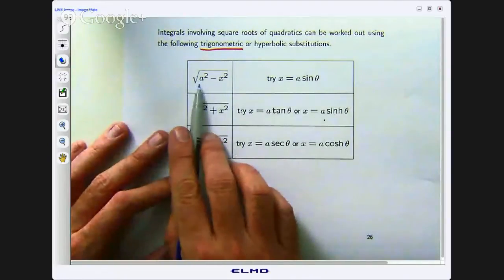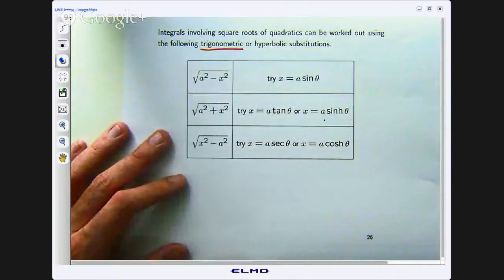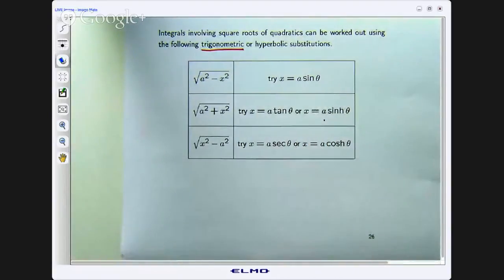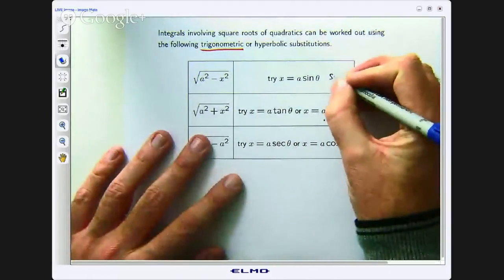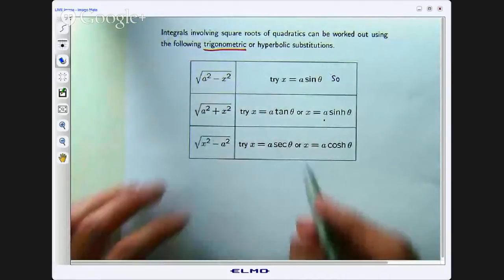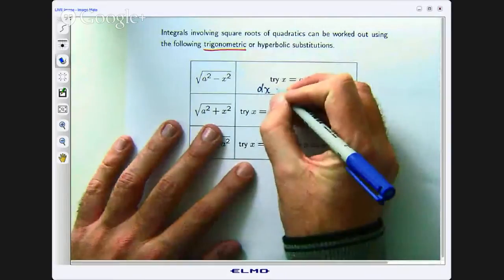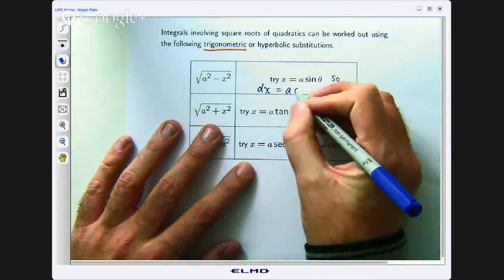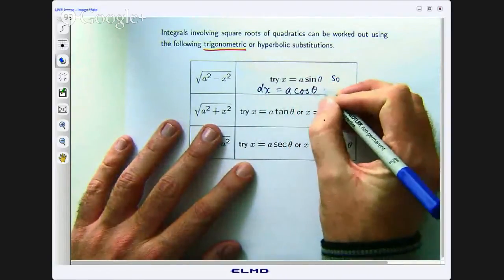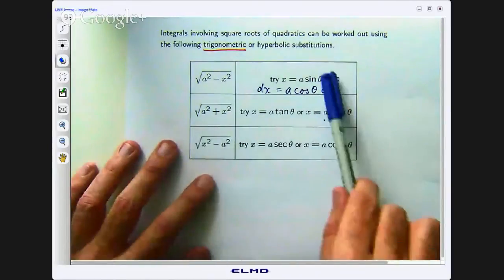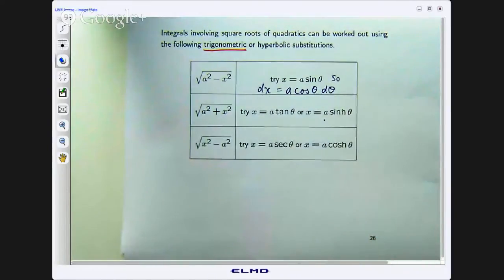If we have a square root of a squared minus x squared we can try the substitution x equals a sin theta. So in this case what we would do is compute the associated differentials. So dx equals a cos theta d theta and then we would sub those two things into the integral that we are working with.